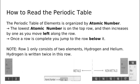Row 1 is a special row as it only consists of two elements, hydrogen and helium, but hydrogen is written twice in this row, once on the left because it often acts as a metal, and once on the right because it also acts as a non-metal.